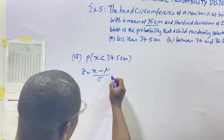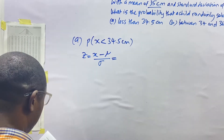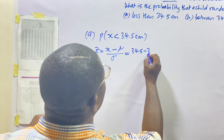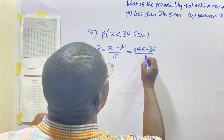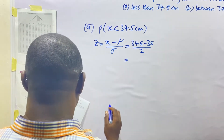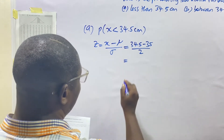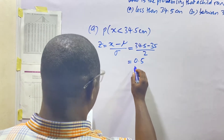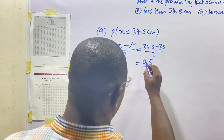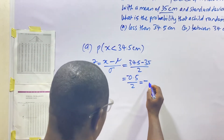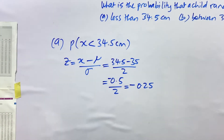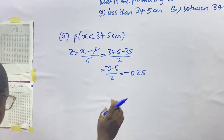So what we have is: 34.5 minus 35 divided by 2. This gives us negative 0.5 divided by 2, which equals negative 0.25. That is our Z-score.